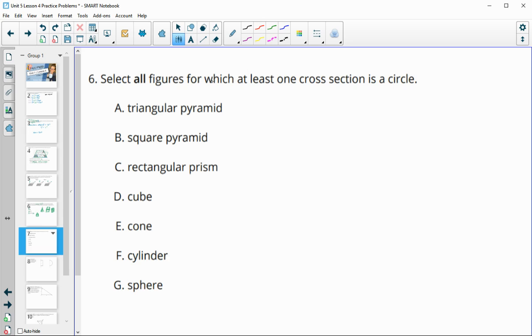Number six, select all figures for which at least one cross section is a circle. So a triangular pyramid would not because that's going to have a triangle at the bottom and go up to a point. So all of the other ones are going to be triangles as well. So square would be either squares or triangles. Rectangular prism is going to have rectangles from bottom to top. So you're going to have rectangles or squares for that one.